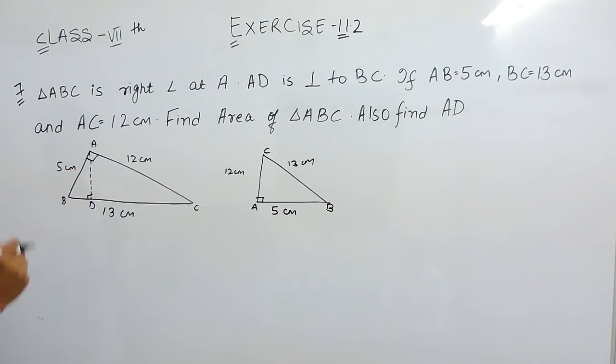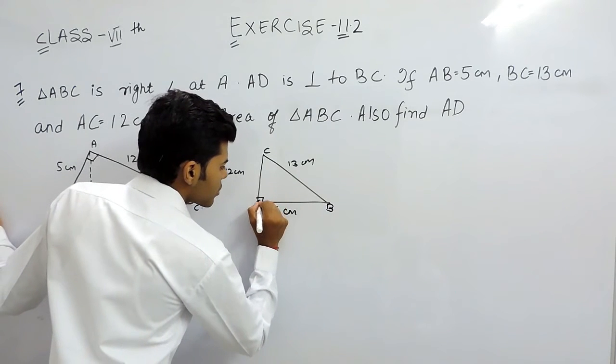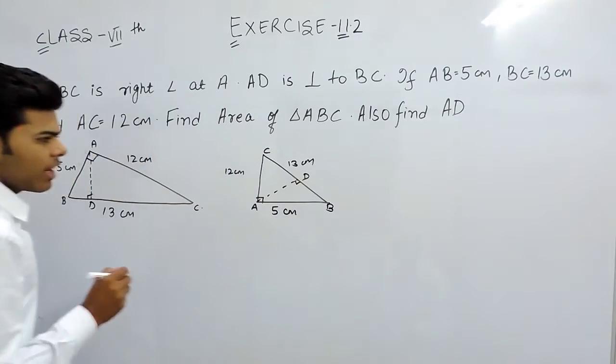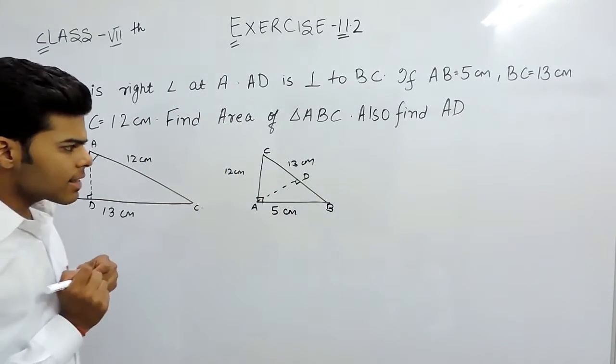And this is perpendicular to BC from A. So it will be like this and this will be D. Now you can see that it is a right angle triangle.